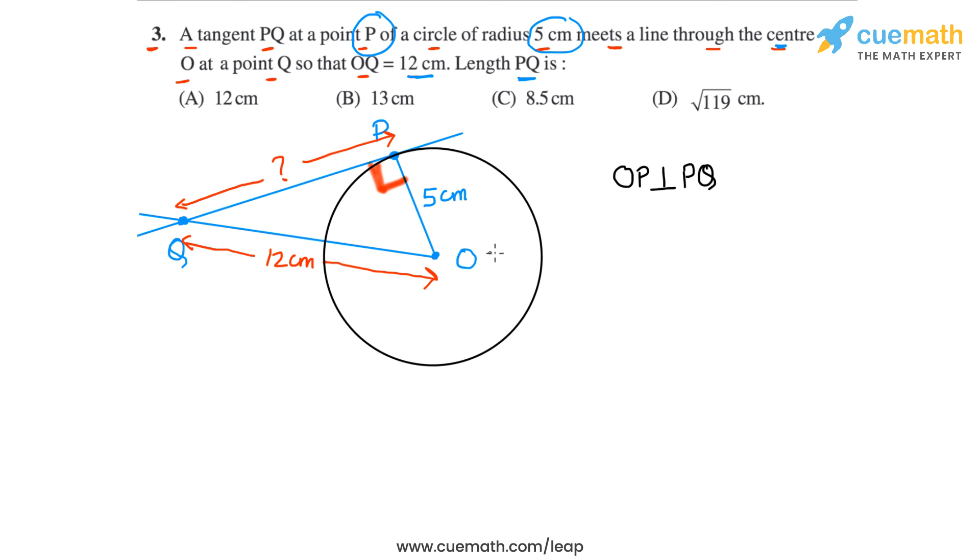Which means that triangle OPQ is a right angled triangle. So we can apply the Pythagoras theorem to triangle OPQ. Triangle OPQ is this triangle that you see in the figure. So we are going to apply the Pythagoras theorem to this triangle, because it's a right angled triangle. And we have two of its sides, so the third side can be found easily. The third side is PQ.